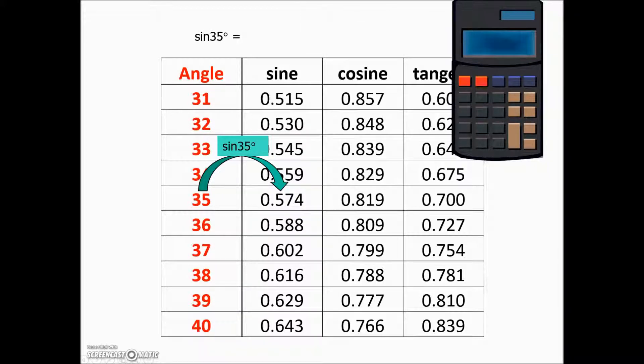If you have a traditional scientific calculator, you need to first enter the angle measurement and then press the sine key. That will cause the display to show the ratio that you're looking for.